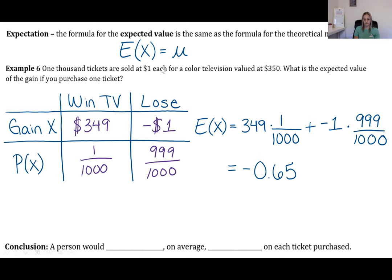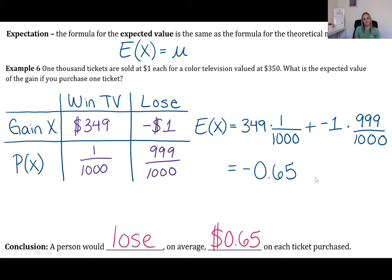Expected value = 349·(1/1000) + (−1)·(999/1000) = −$0.65. So if you buy a ticket, on average you expect to lose 65 cents. The expected value is negative, which signals you should not play this game. The gain is $349 not $350 because you already paid $1 for the ticket.